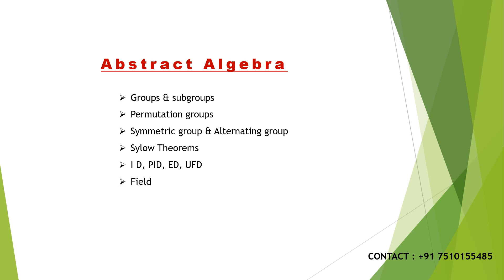Next is Abstract Algebra. In abstract algebra, there are groups and subgroups, which are important. We also study counter-examples, symmetry groups, and alternating groups. We will work through problems using Sylow theorems. The next topic is Fields — we examine finite order, the order of a possible field, and the number of subfields. These areas are very important in abstract algebra.